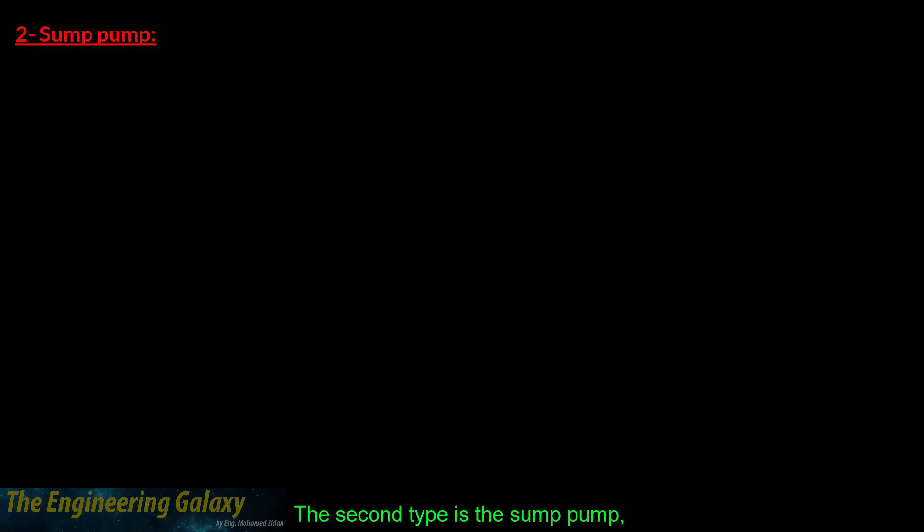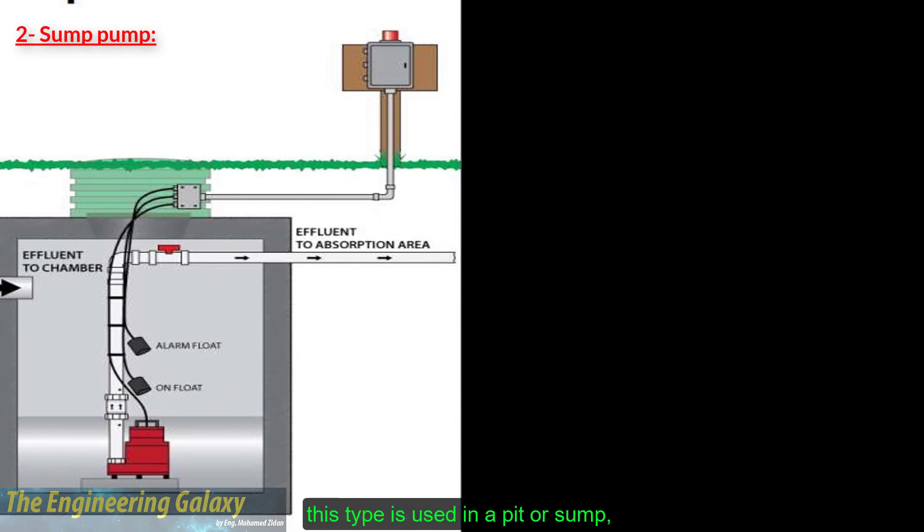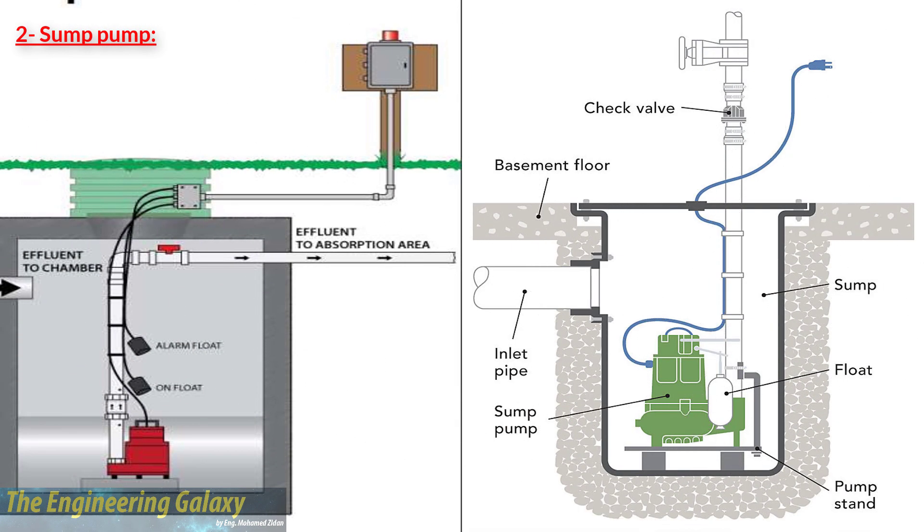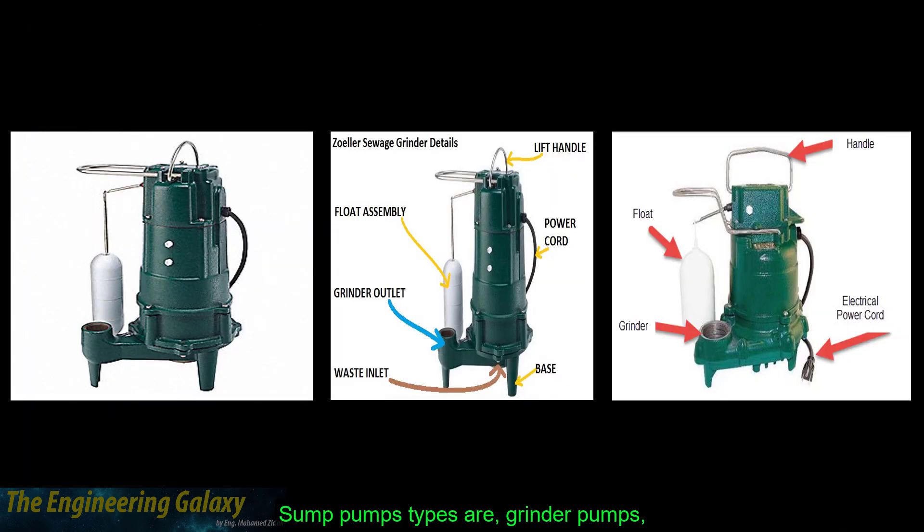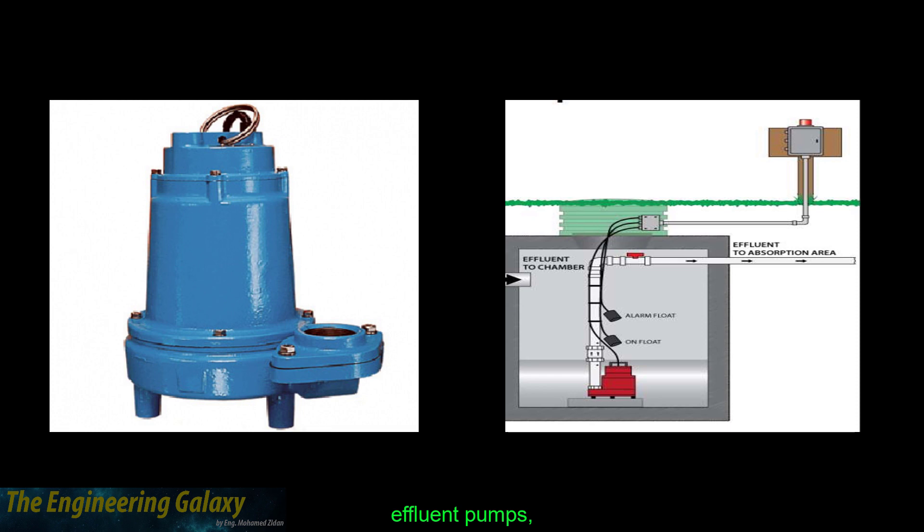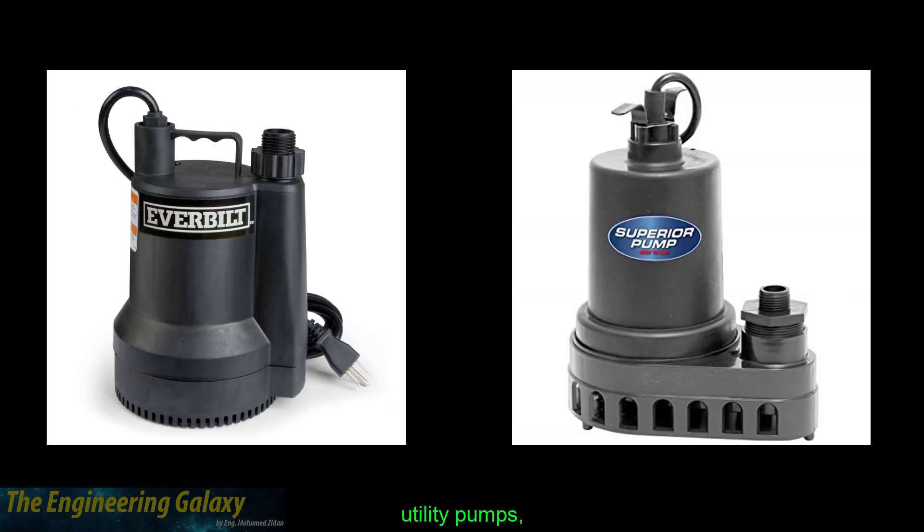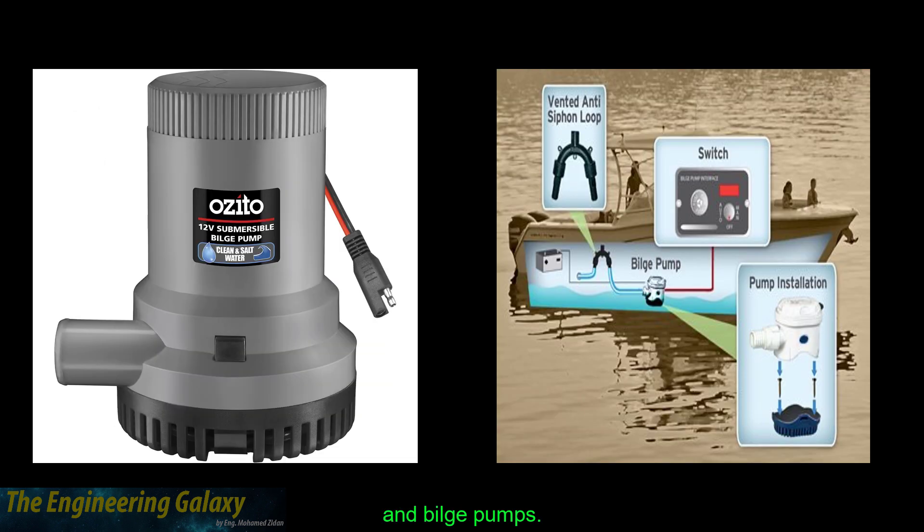The second type of the submersible pumps is the sump pump. This type is used in a pit or sump, and sometimes just a lower area like a swimming pool cover or a fountain. Sump pump types are grinder pumps, effluent pumps, utility pumps, and bilge pumps.